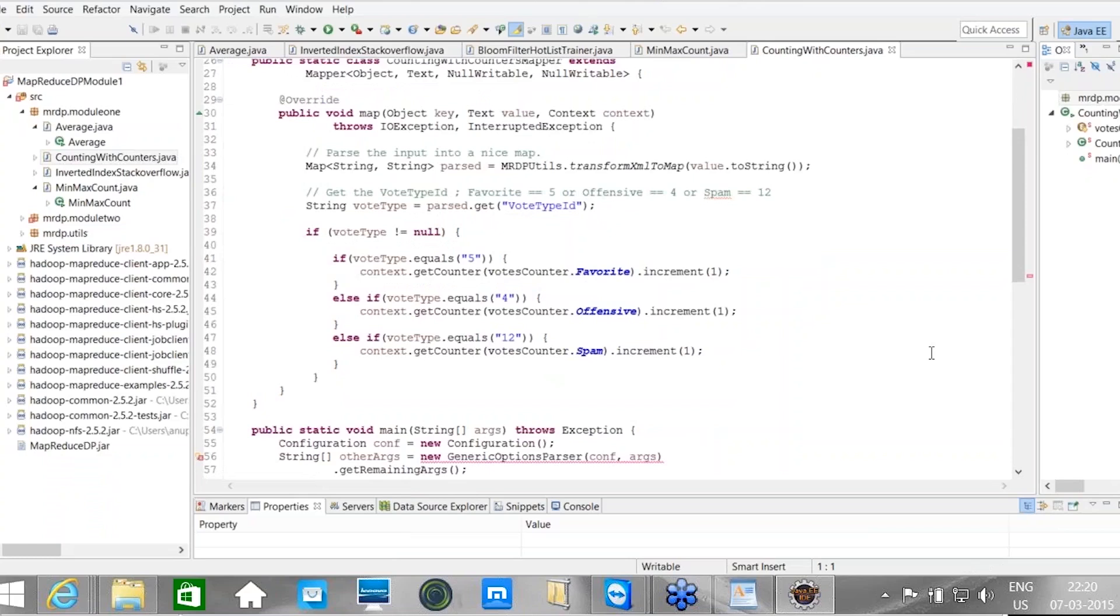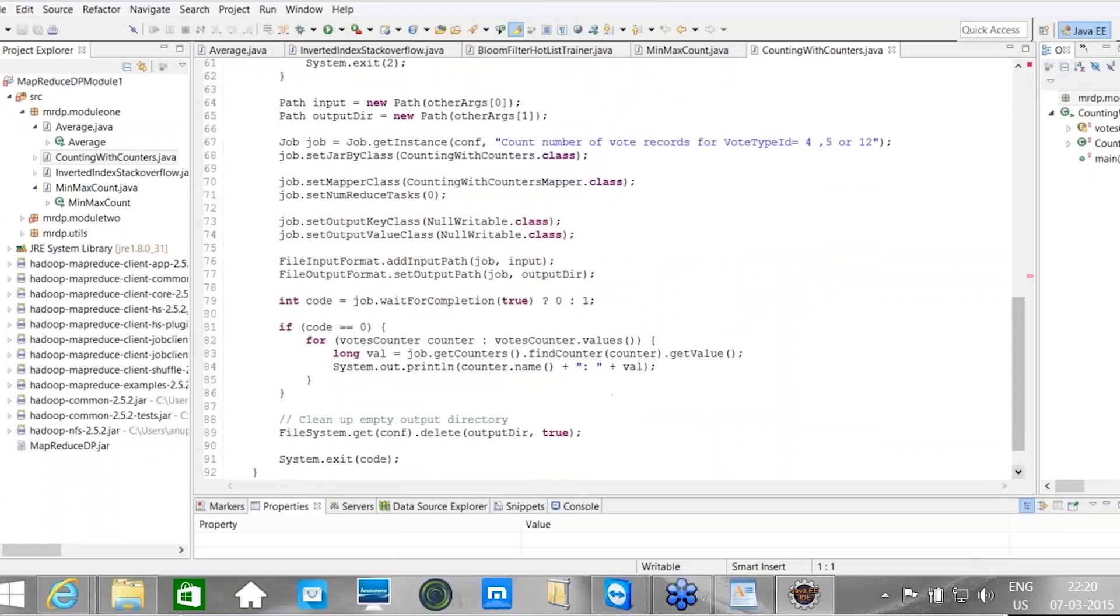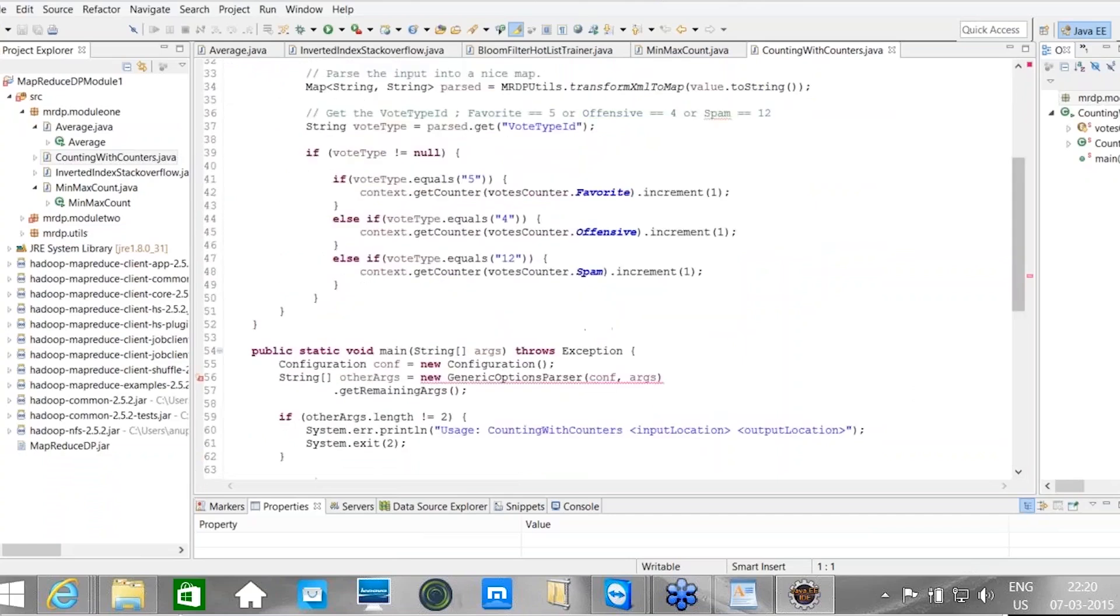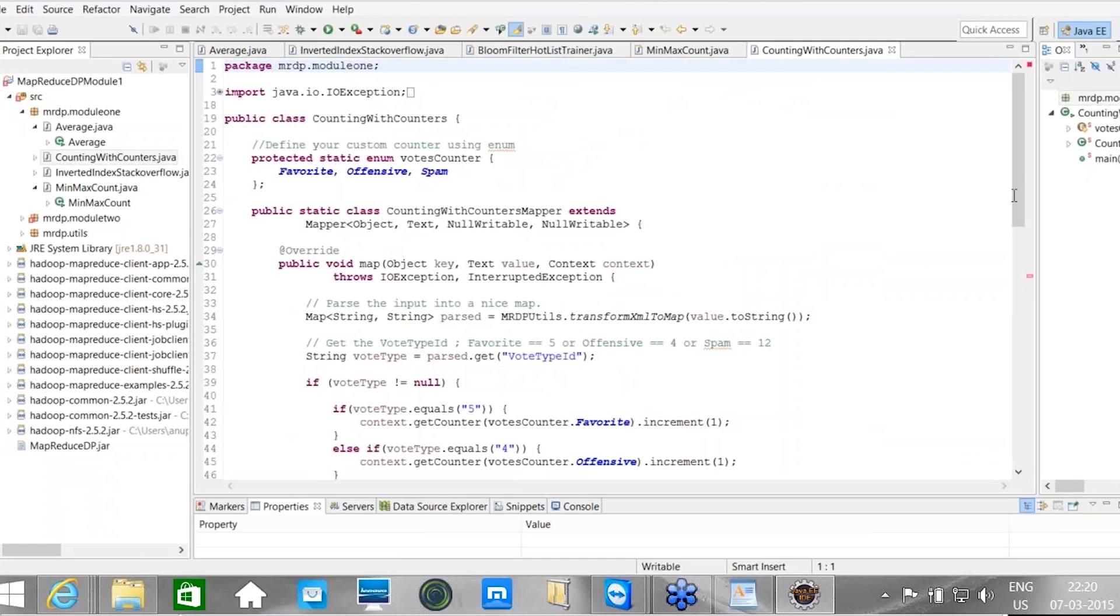Here is where you actually define your custom counter, which is called the votes counter. And it's got three different values: Favorite, offensive, and spam.